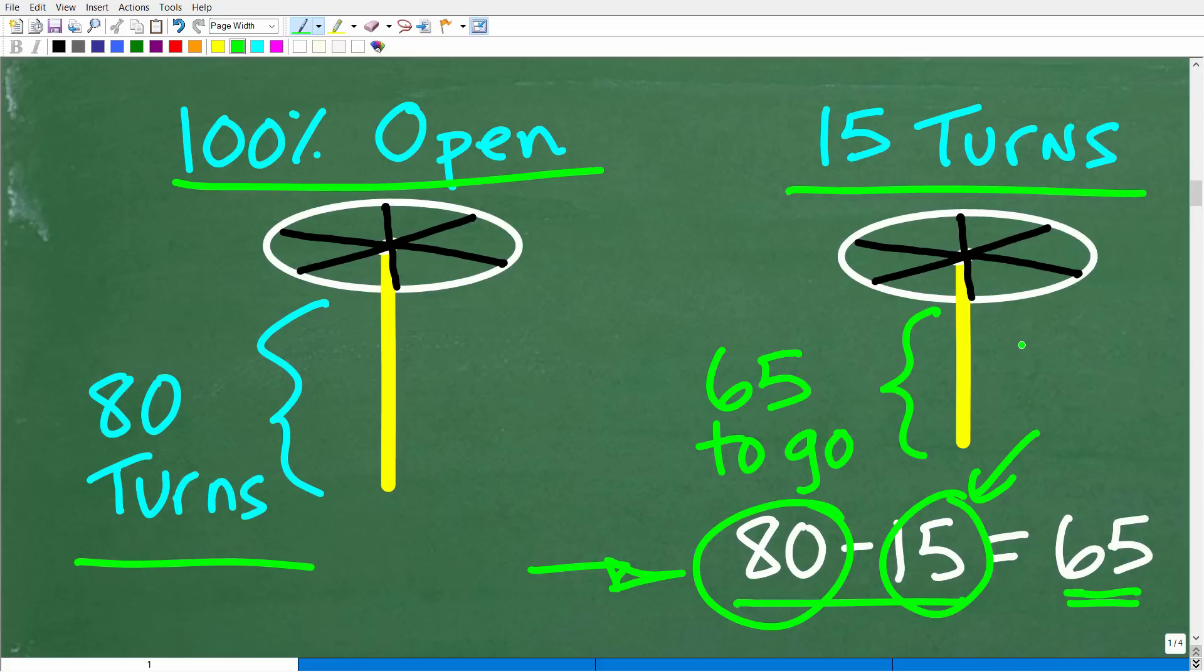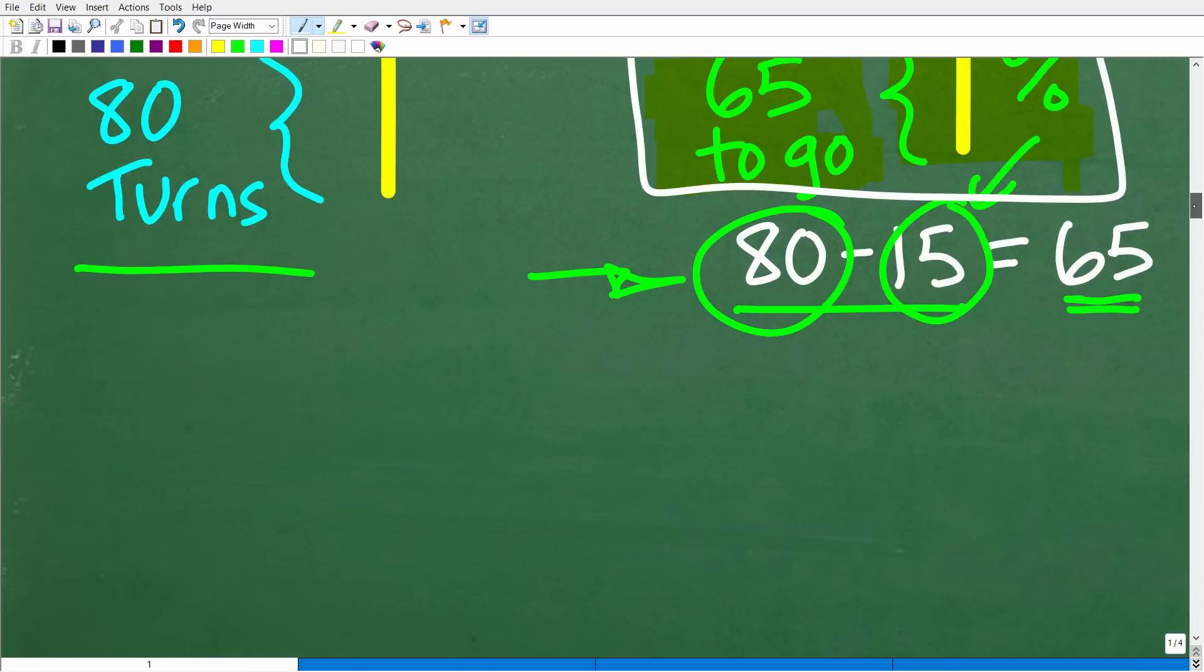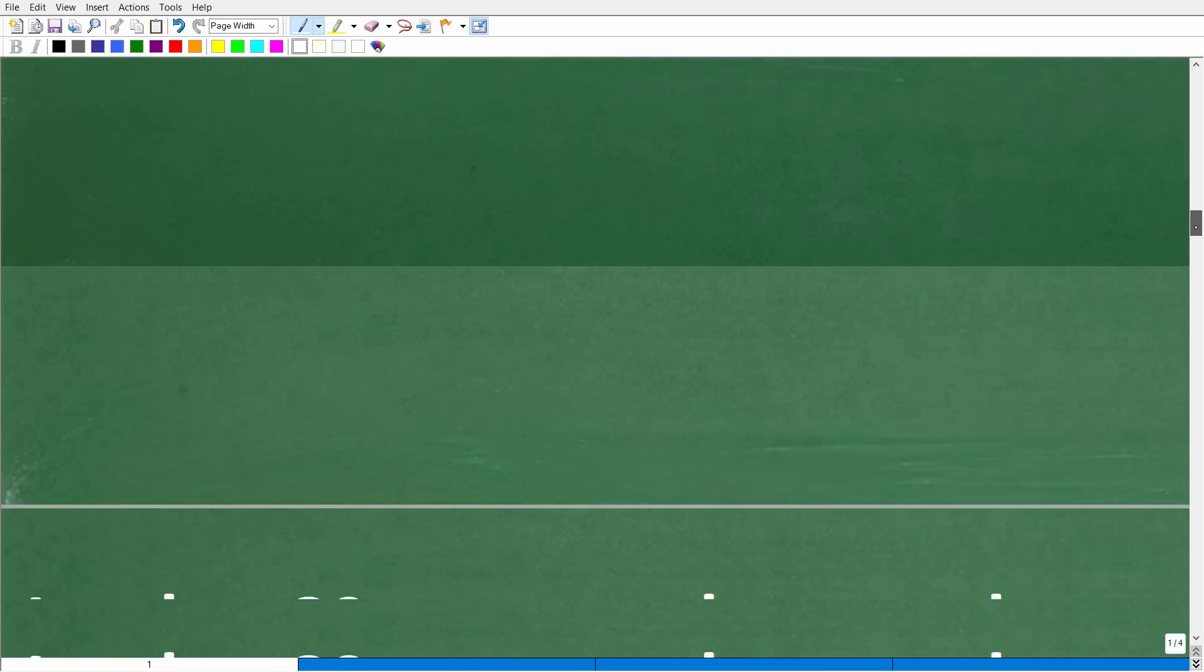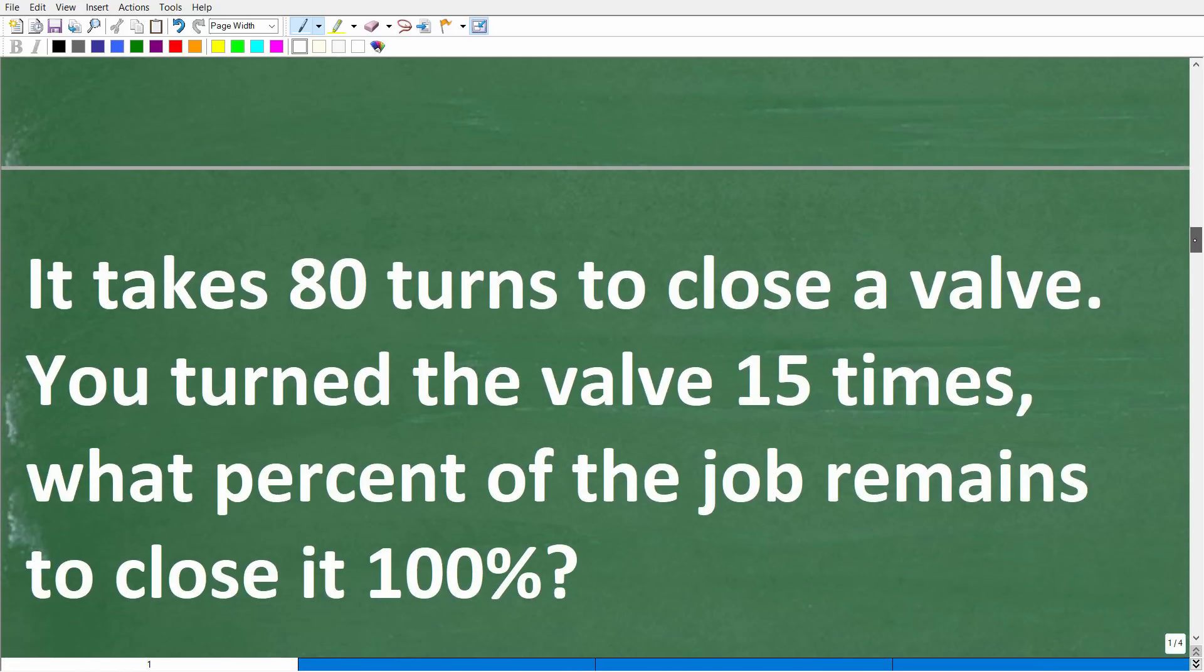So the question is, what percent of the job remains? Okay, well, we need to kind of link together these 65 turns that we have to do and basically try to equate what percent that represents to finish this job. Okay, so hopefully that all makes sense. And if you're like, hey, Mr. Utah Math man, I think I know where this is going, well, let's go ahead and take a look at the problem again.